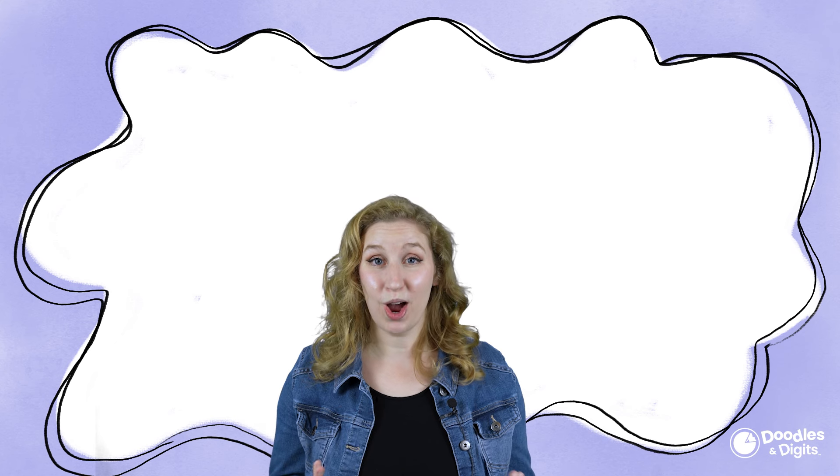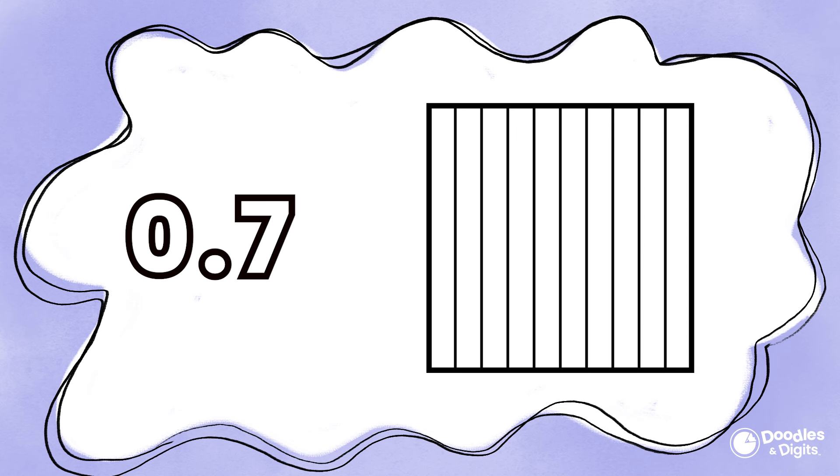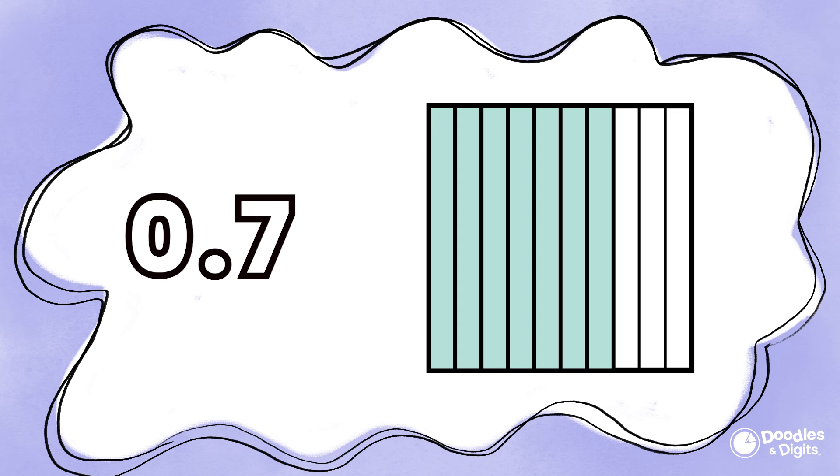Now that we've named a few different decimals, let's see if we can draw models of these ones. We have 0.7 or seven tenths, so I'm going to take my whole and break it into tenths, then I'm going to shade in seven tenths.